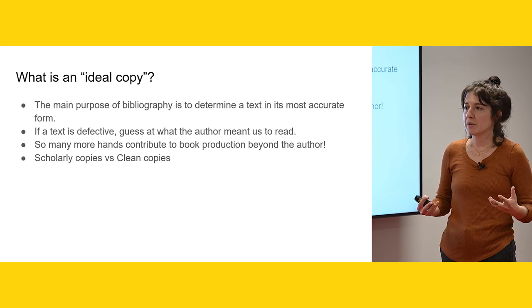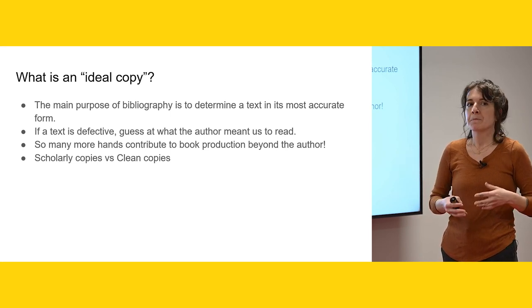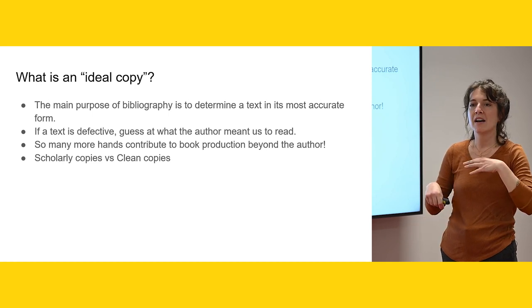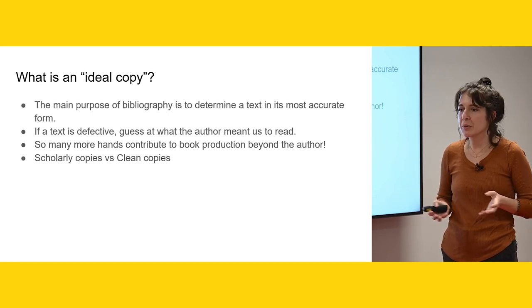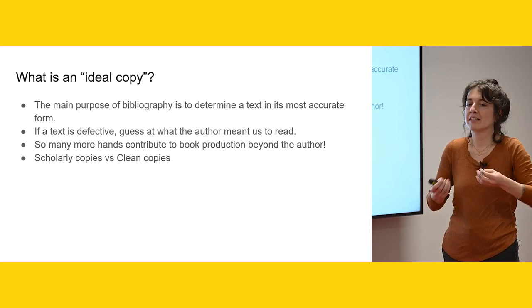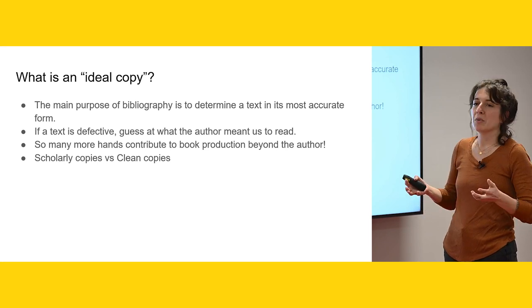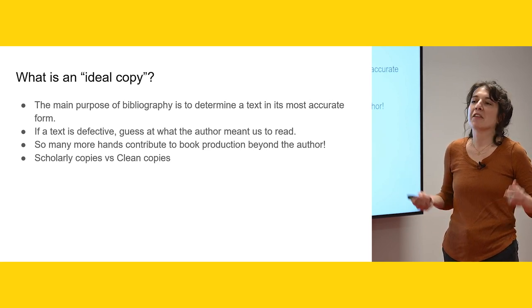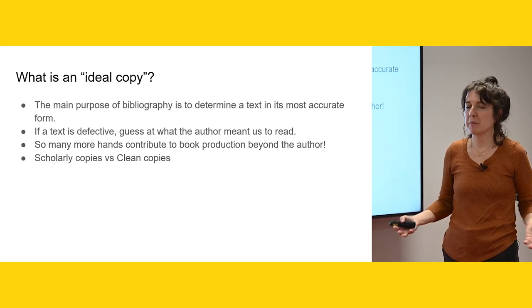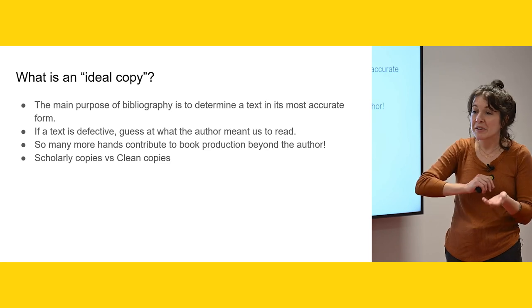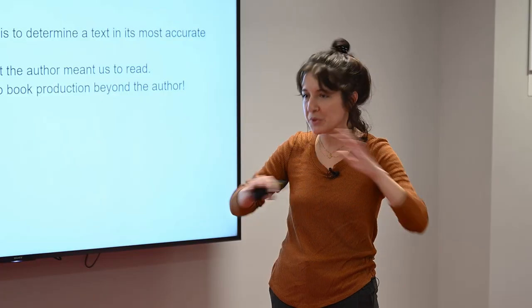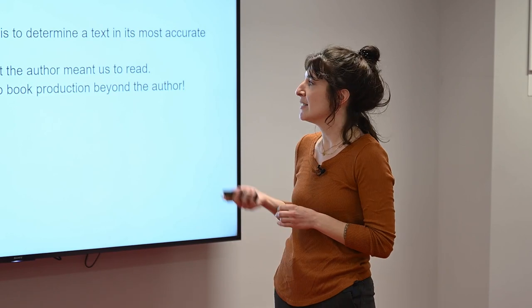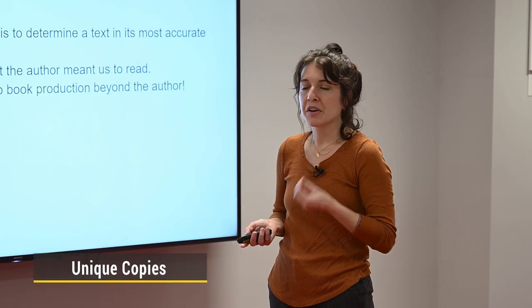When bibliography was first conceived as a very Western tradition, they were searching for this ideal copy — a copy that is clean, doesn't have marginalia, doesn't have any anomalies. It is the most representative version of an edition, and that does have value. But if you are interested in learning about history, materiality, and book production, scholarly copies are rife with information you won't find if somebody has literally gone through and cleaned the pages. We're looking for evidence of production, use, and reuse. Scholarly copies are much richer for our purposes.